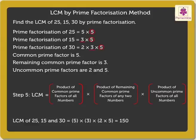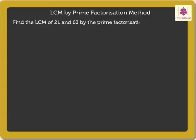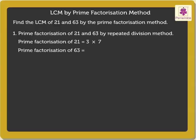Now let us solve another example: Find the LCM of 21 and 63 by the prime factorization method. We find the prime factors of 21 and 63 by repeated division method. The prime factorization of 21 is 3 × 7, and the prime factorization of 63 is 3 × 3 × 7.